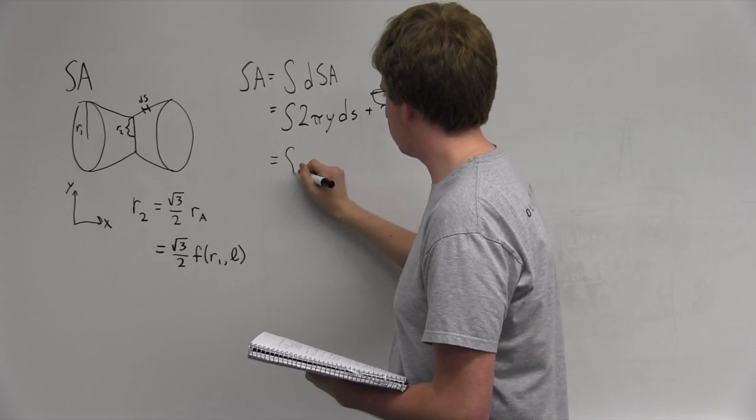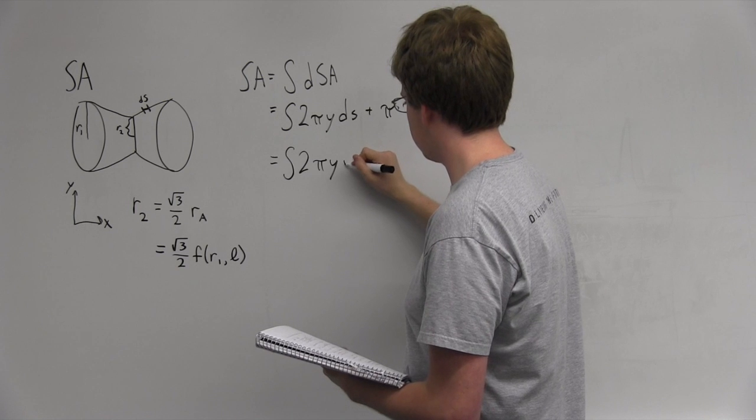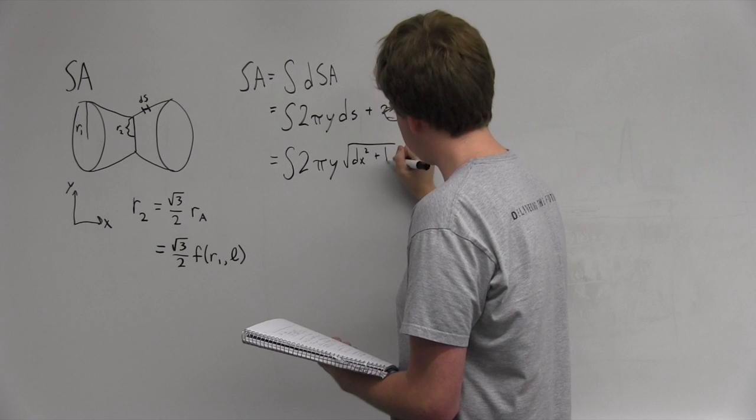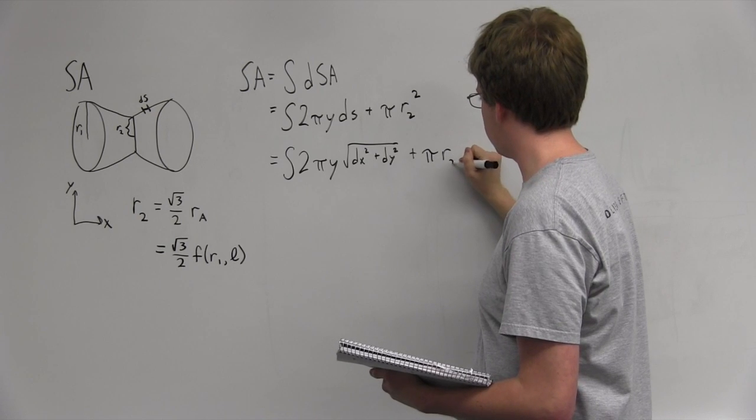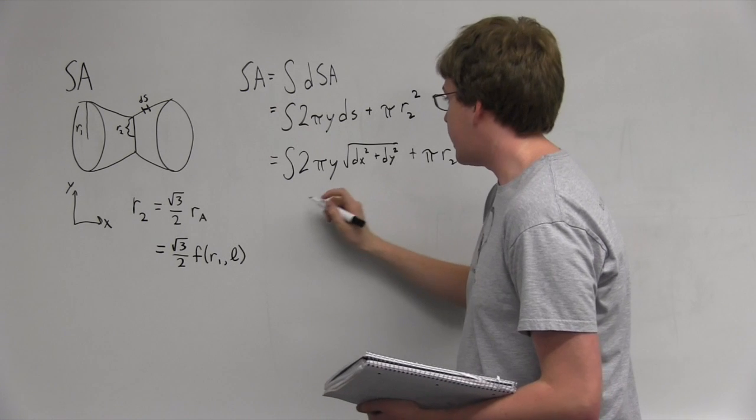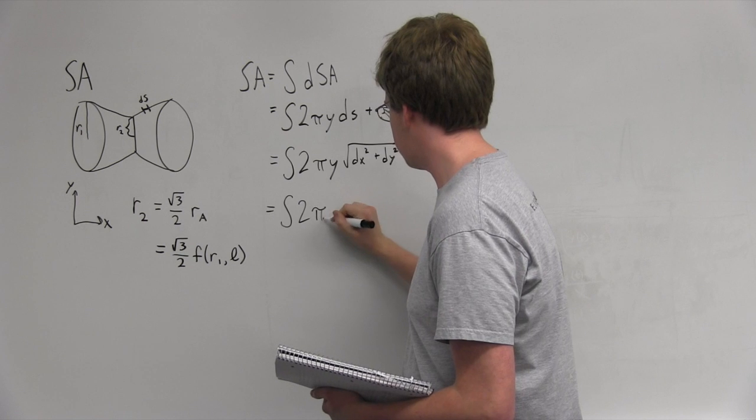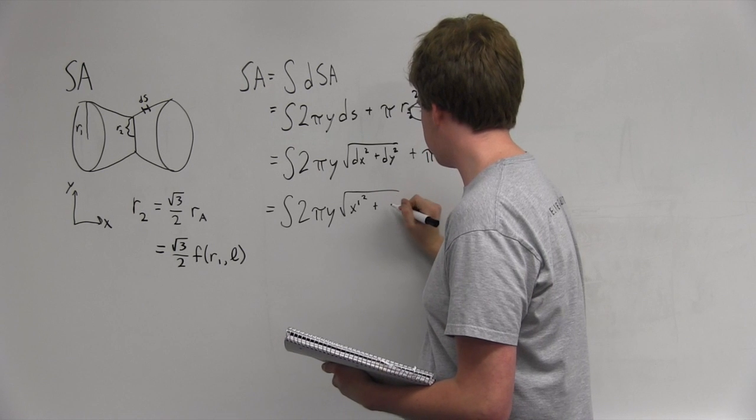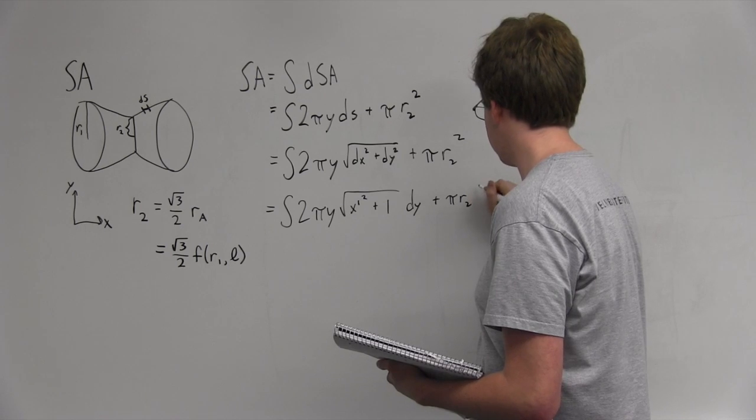Now, we can continue to change this, since 2πy ds is equal to 2πy times the square root of dx, a little change in x, plus dy each squared square root. Naturally, we want to keep the πR2 squared. What we want to do next is factor out a dy such that we have the integral 2πy times the square root of x prime squared plus 1 dy plus πR2 squared.